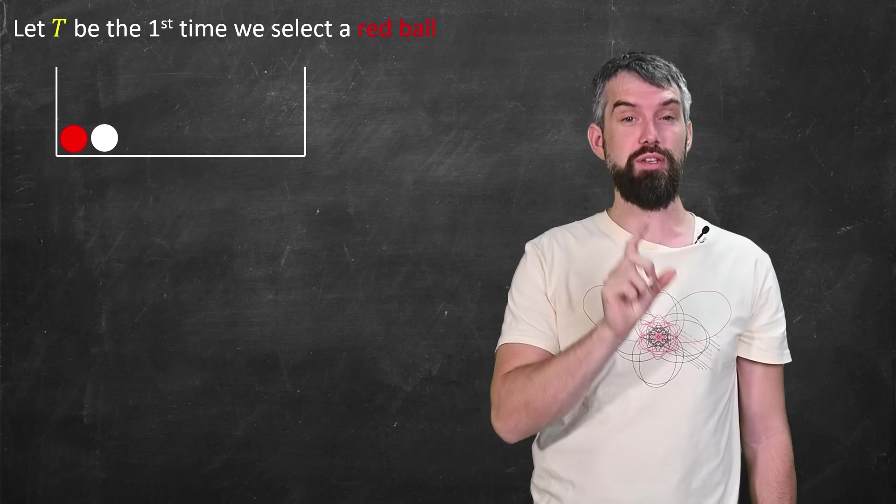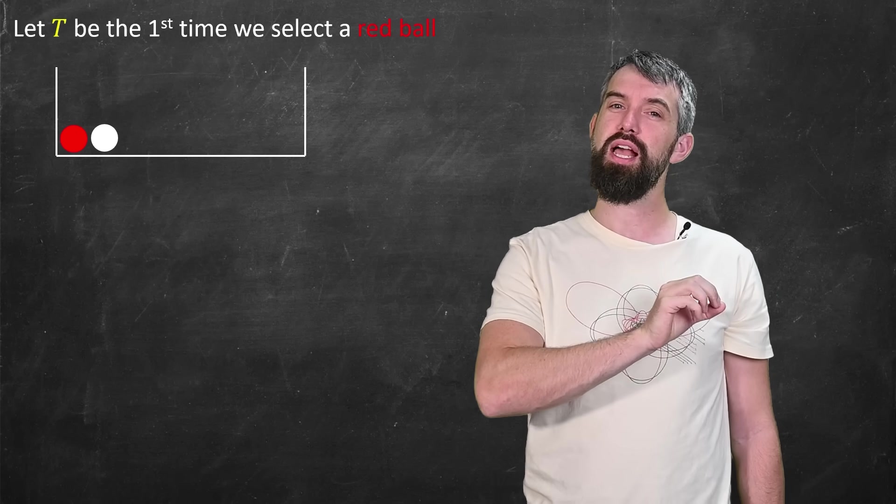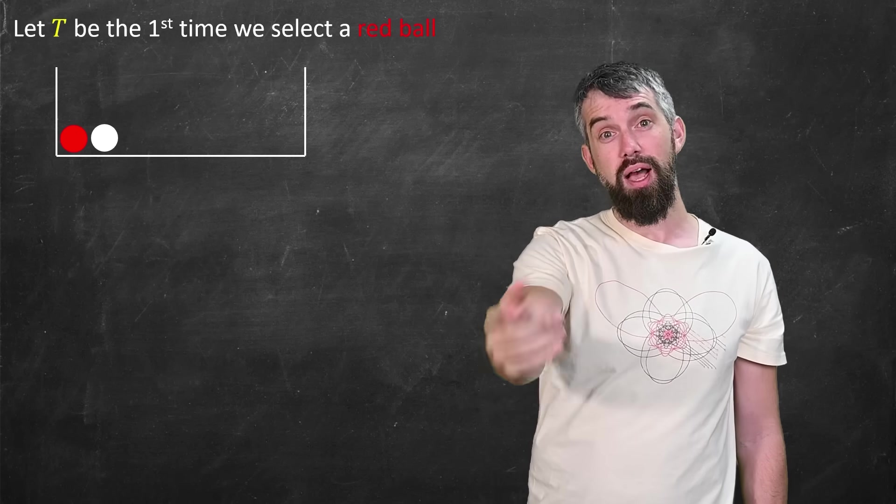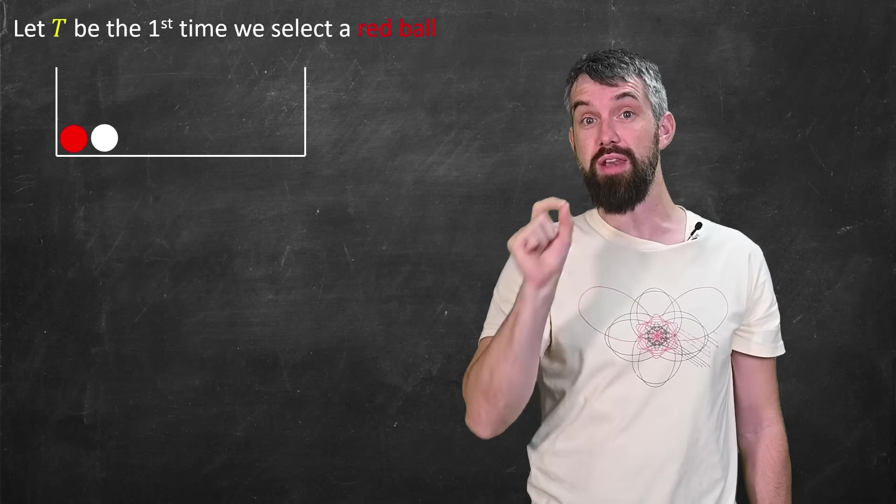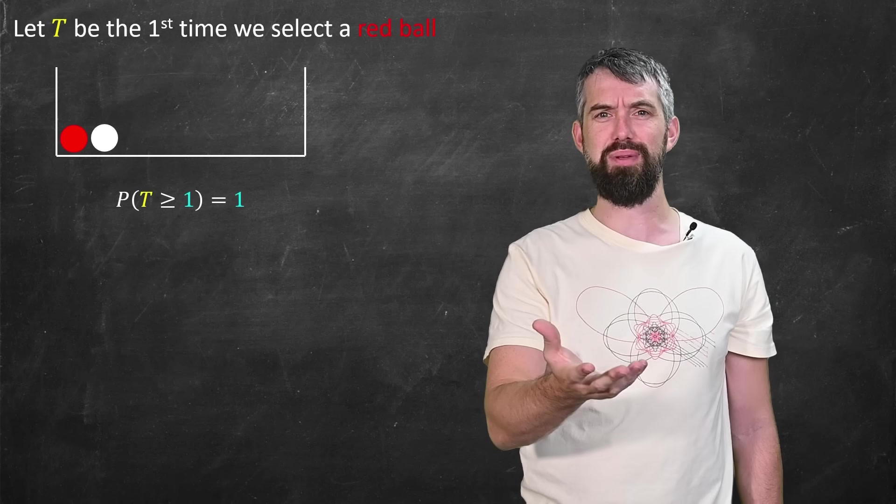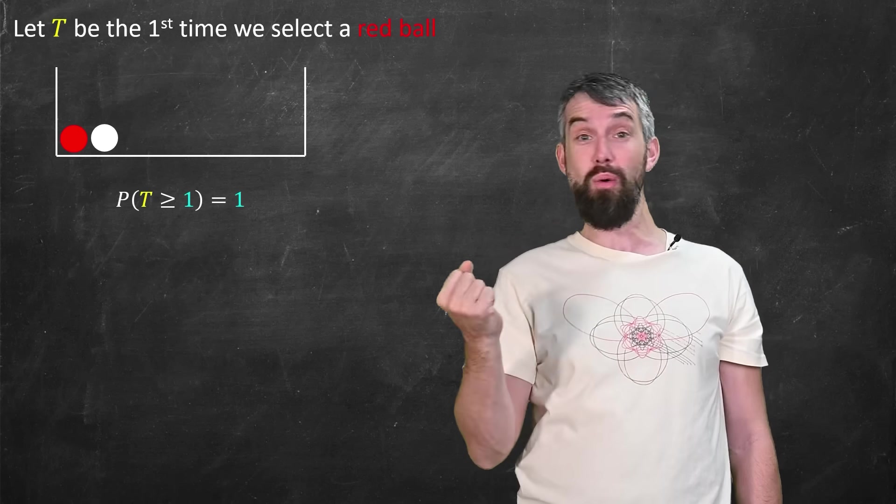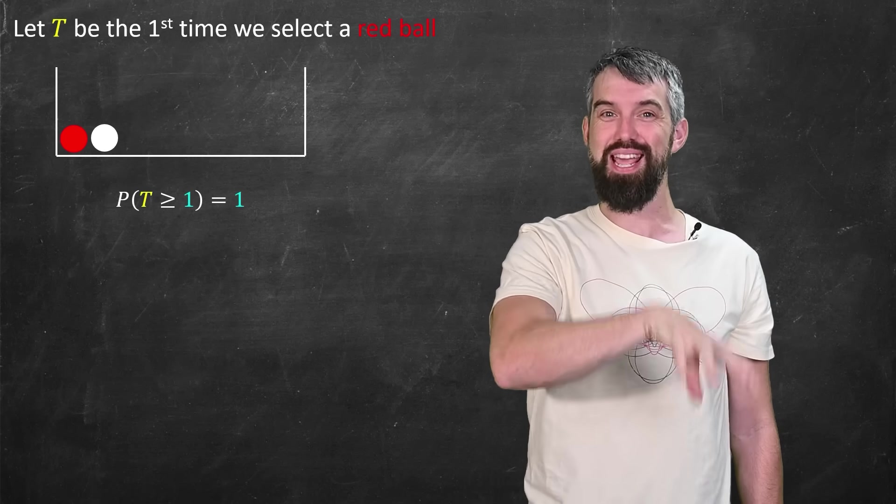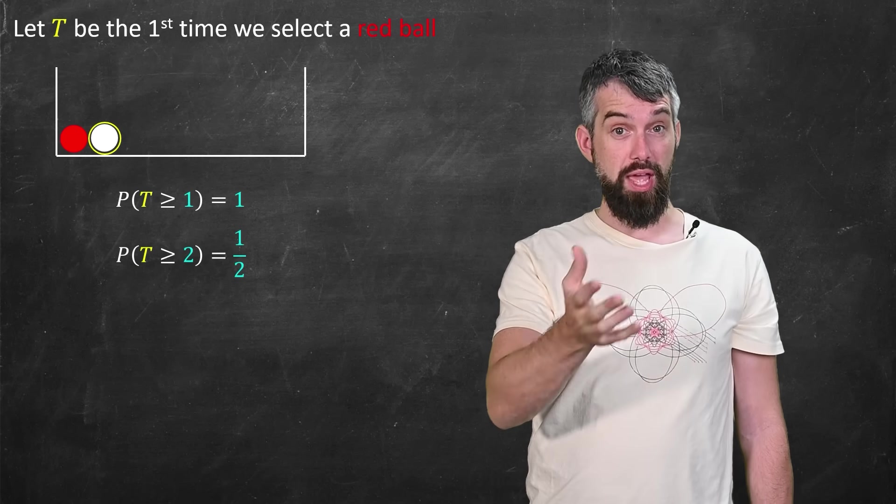And I'm going to let T be the variable that denotes the length of time until you pick the first red ball. What's the probability that the amount of time it takes is more than one? Well, it always takes at least one attempt to reach in. So the probability is one.